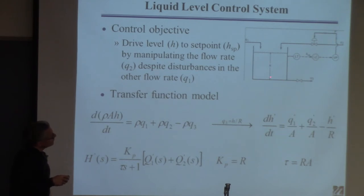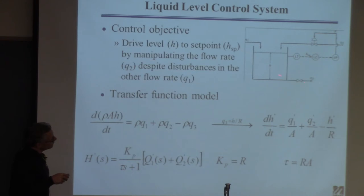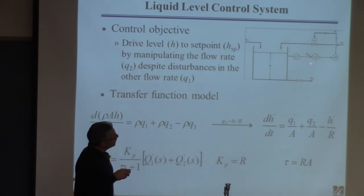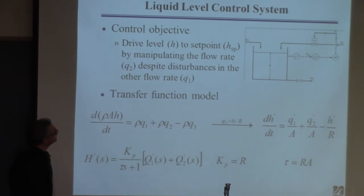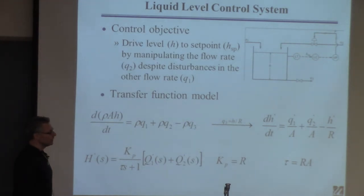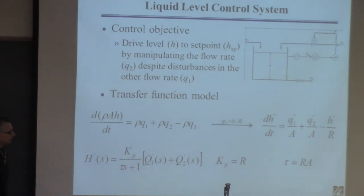Here is a motivating example: a liquid level system. We'd like to control the level in this tank. We have two streams coming in — we have no control over Q1, but we can control the flow of Q2. There is gravity-driven flow out. We measure the level, send that measurement to a controller which compares it to a set point, and the controller generates a signal to drive the valve through a current-to-pneumatic converter. So we manipulate Q2, and the primary disturbance is Q1.